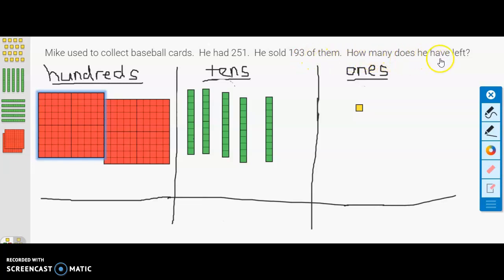How many does Mike have left? This is clearly a subtraction problem because he used to have 251 and he got rid of or he sold a bunch of them, 193. So we're trying to figure out how many baseball cards does Mike have left.